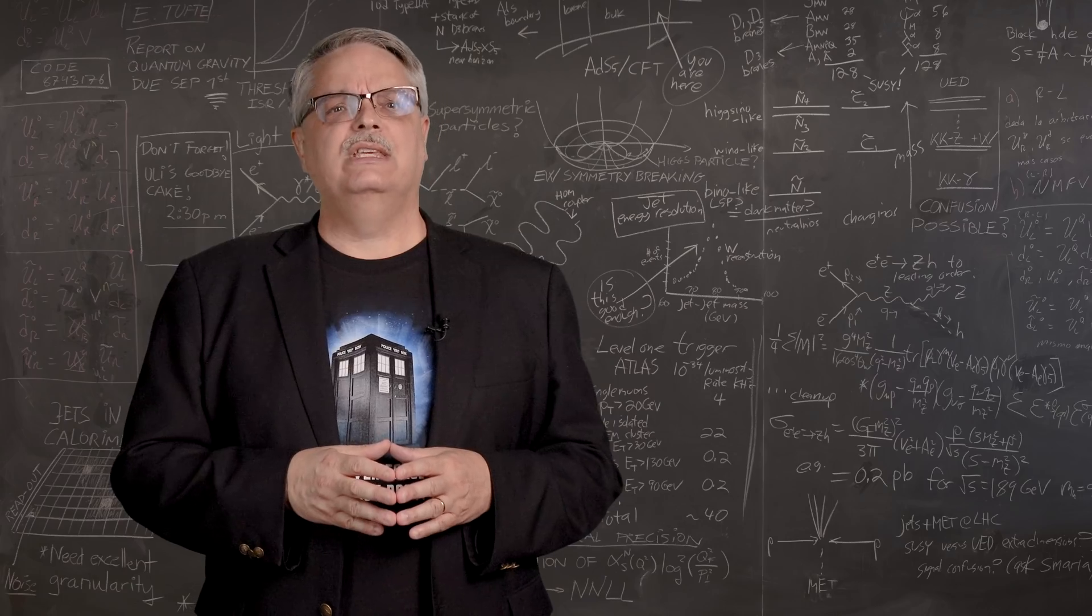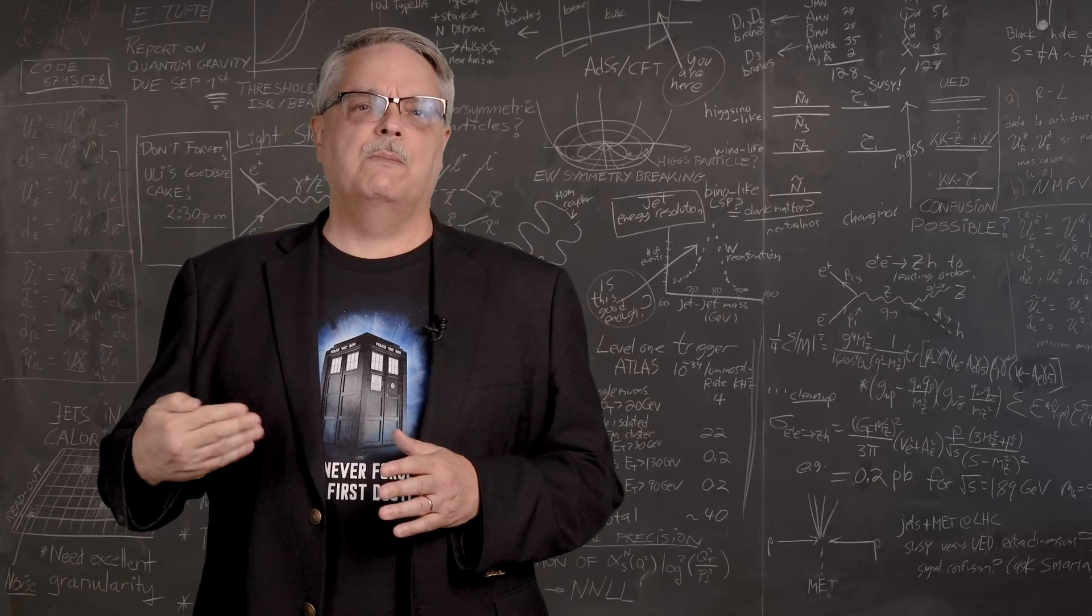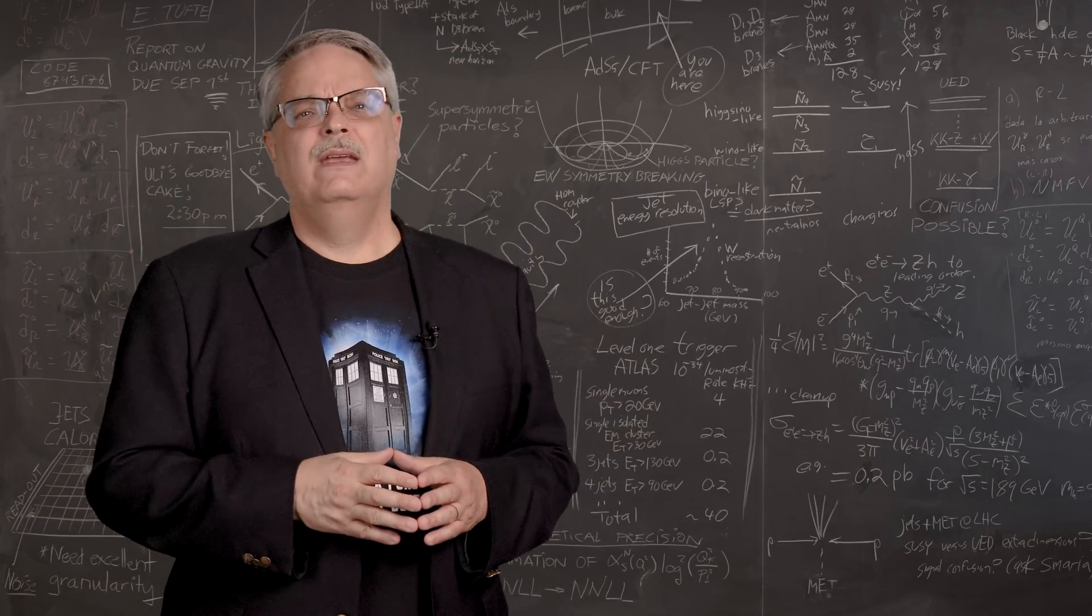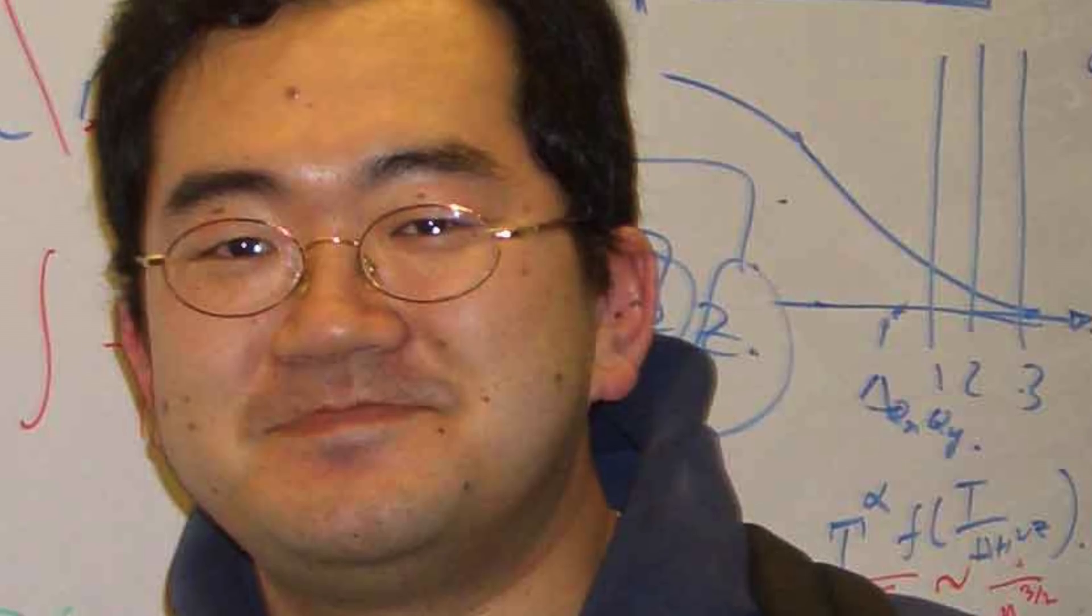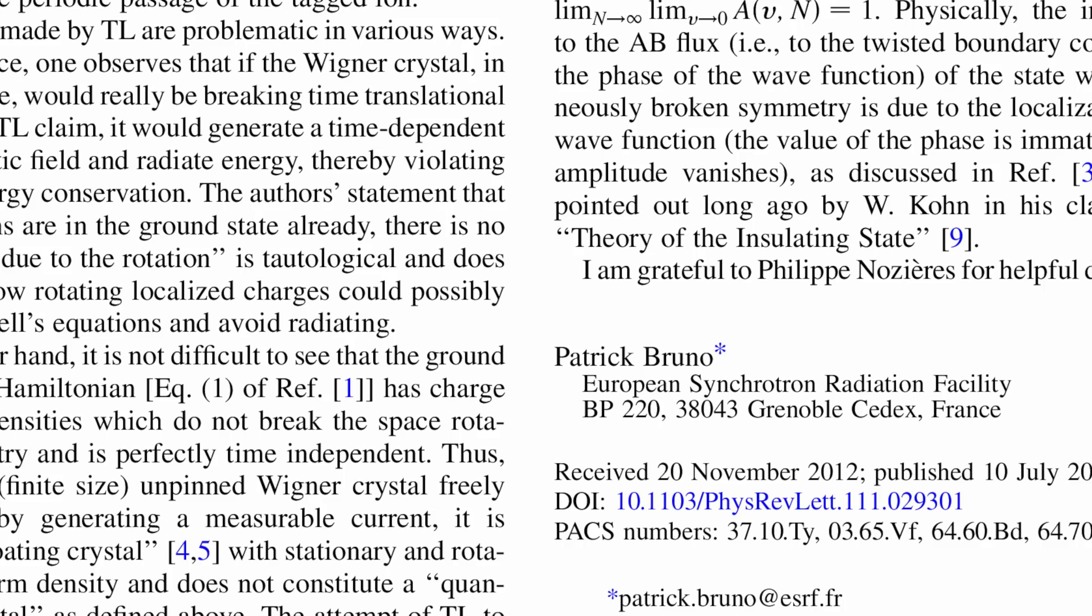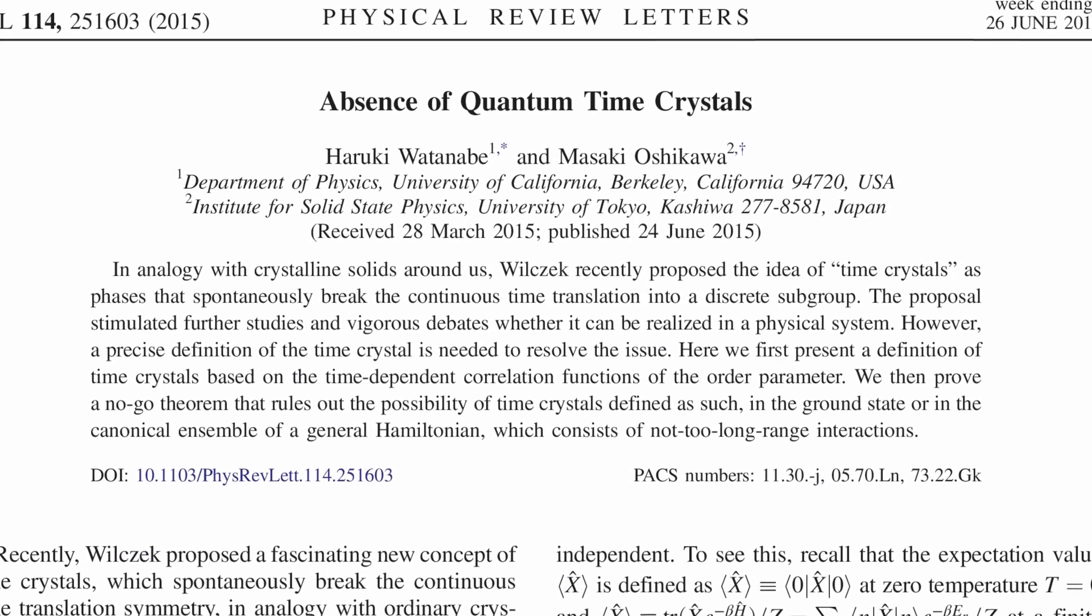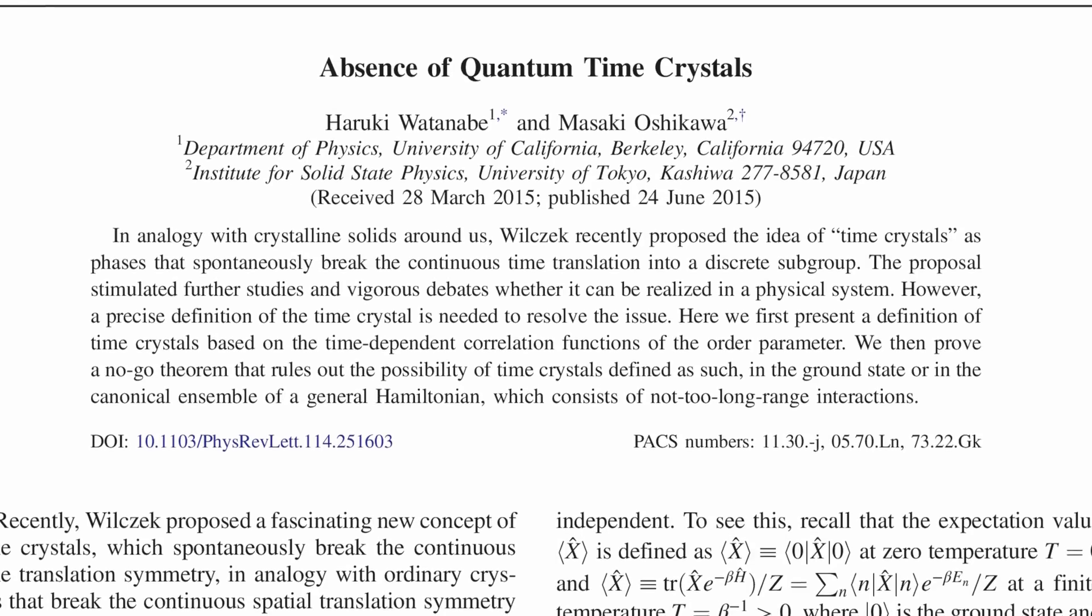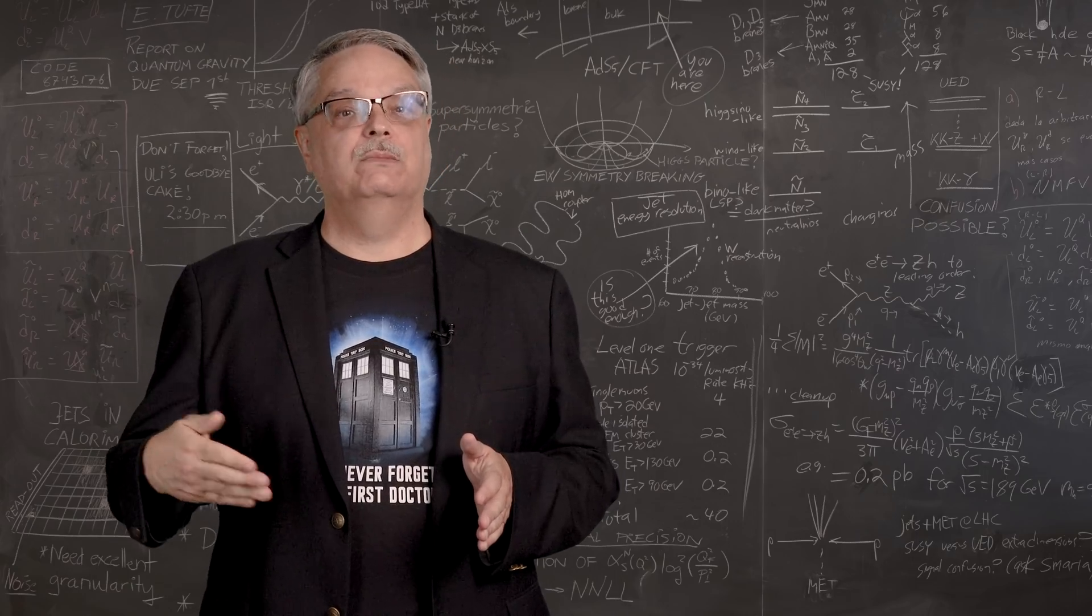Now, Wilczek imagined that these crystals would be perpetual motion machines, cyclically repeating their structure forever. However, shortly after that, two theoretical physicists by the name of Patrick Bruno from France and Masaaki Oshakawa from Tokyo independently published papers that said that time crystals could only happen if the system was not in thermal equilibrium, which is just a fancy way of saying that time crystals can exist only if the energy of the system changes.